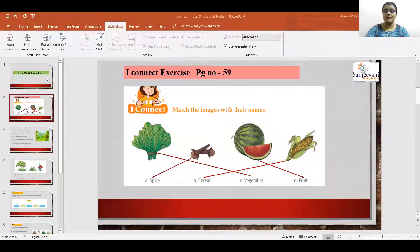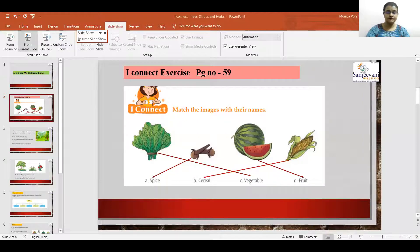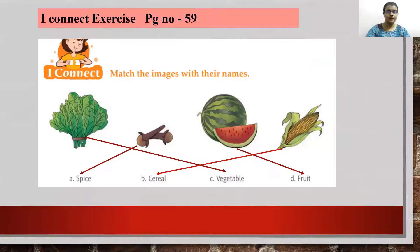So before we start, please open your course book children. Open your iConnect exercise which is given on page number 59. So match the images with their names.